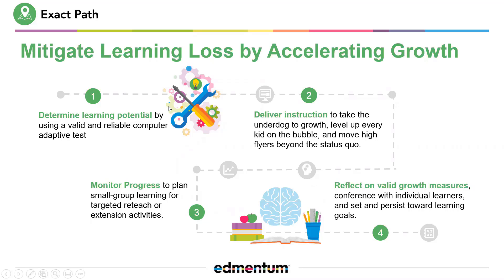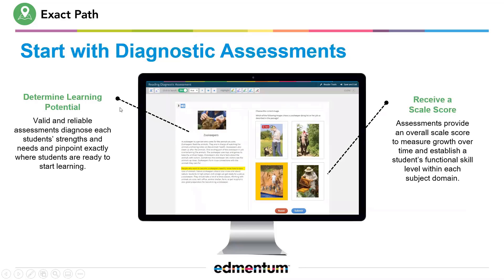That starting point is Edmentum's computer adaptive test, which is a valid and reliable psychometric measure of a student's strengths and needs so that we can accurately pinpoint what they're ready to start learning. The primary measure of a student's learning potential is the scale score. This is a score that runs from 500 to 1500 and is available in math, reading, and language arts, to really determine where a student falls on a standardized scale used across all student populations.